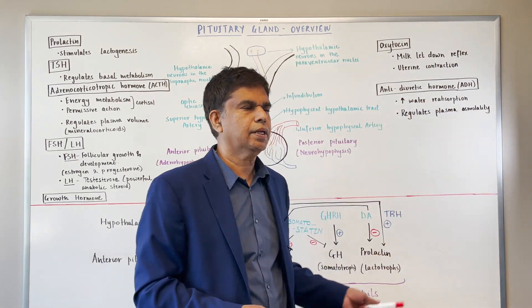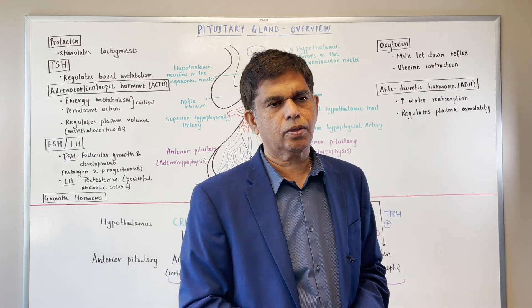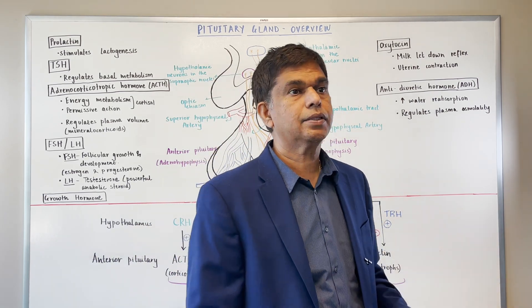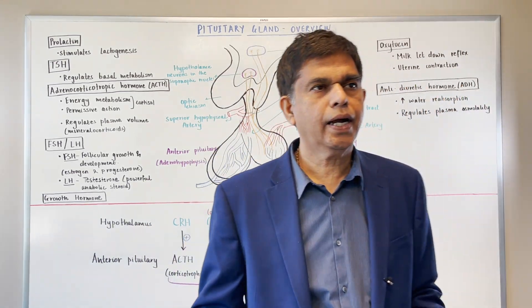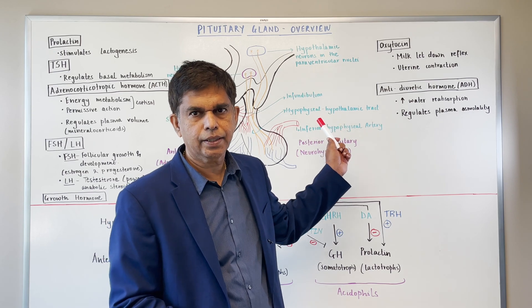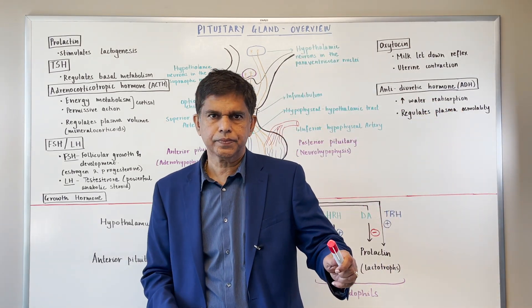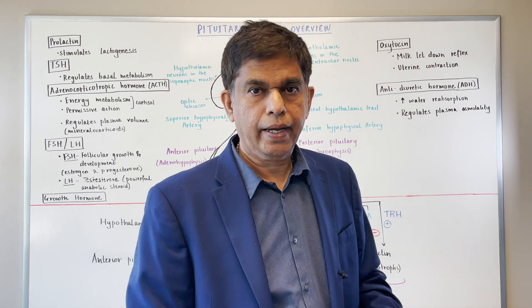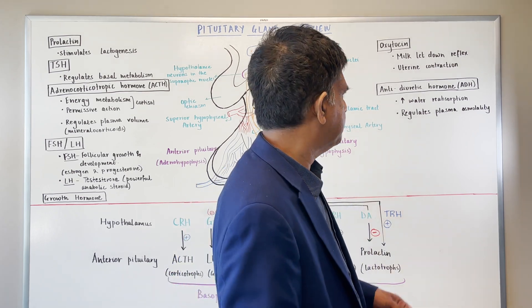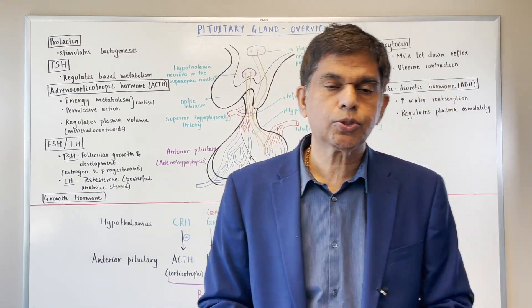The other major posterior pituitary hormone is ADH, anti-diuretic hormone. The hypothalamus has osmoreceptors continuously measuring the osmolarity of the blood. In dehydration there is increased osmolarity, so the hypothalamus sends a signal to the posterior pituitary to release ADH. ADH acts on the kidney, telling it to reabsorb water to correct the situation. ADH increases water absorption and regulates osmolarity.